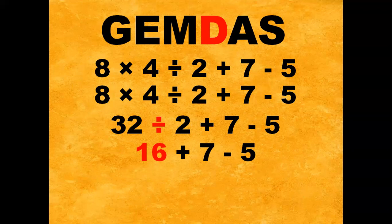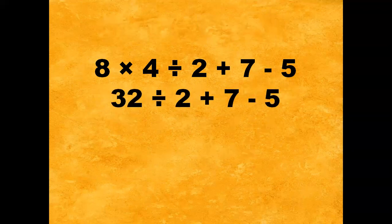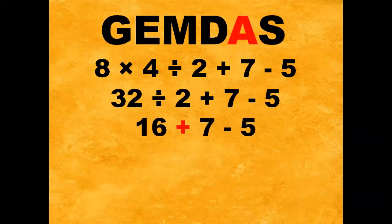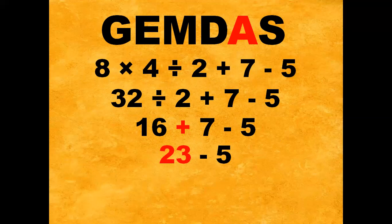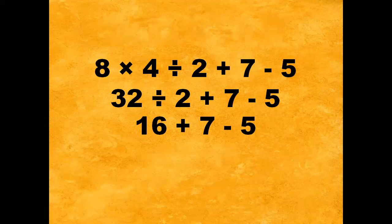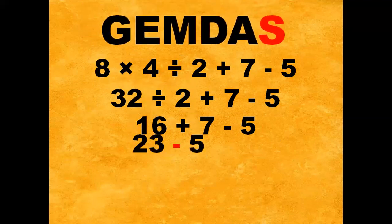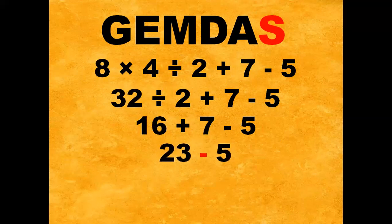After division, we proceed to addition: 16 plus 7 gives us 23 minus 5. After addition, the last operation is subtraction: 23 minus 5, the answer is 18.